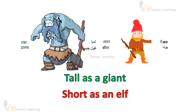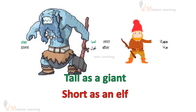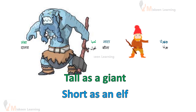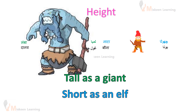Tall as a giant — eek giant ki tira, lamba. Short as an elf — aur eek boni ki tira, nata. Yahaan hum kis cheese ka comparison kar raha hai? Height ki, un chai ki — we are comparing height here.